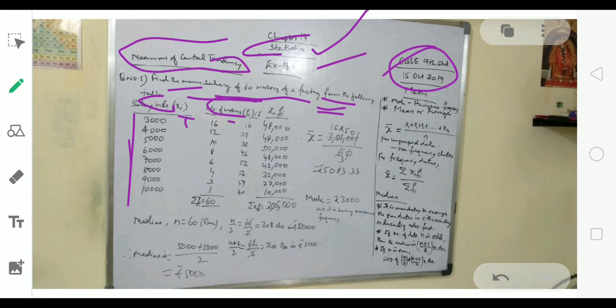We are given: 3000 with 16 frequency, 4000 with 12, 5000 with 10, 6000 with 8, 7000 with 6, 8000 with 4, 9000 with 3, and 10000 with 1.